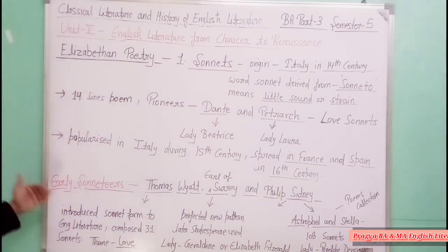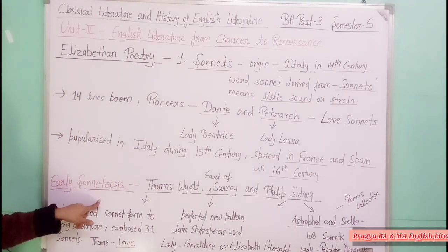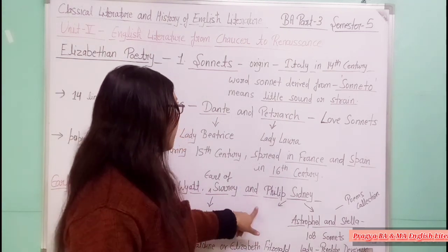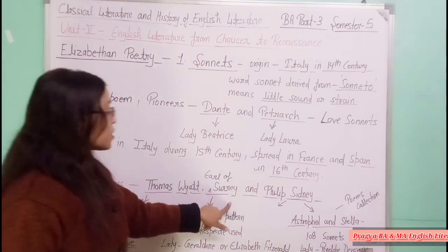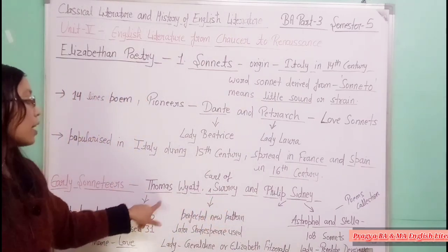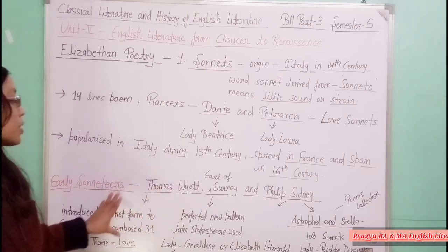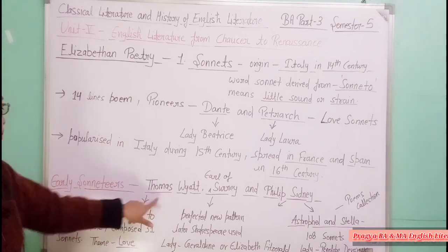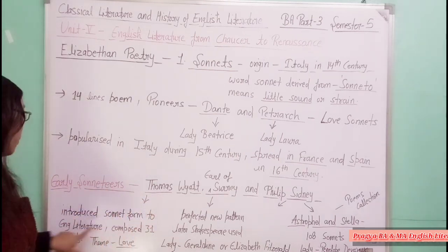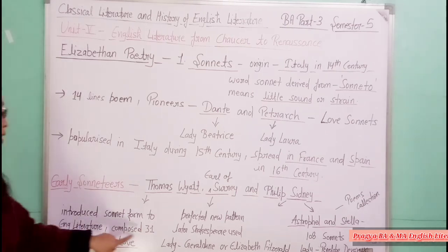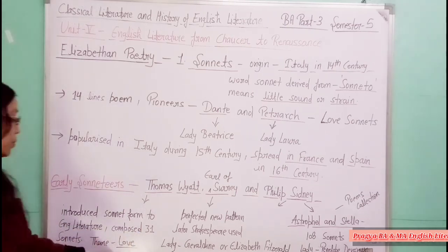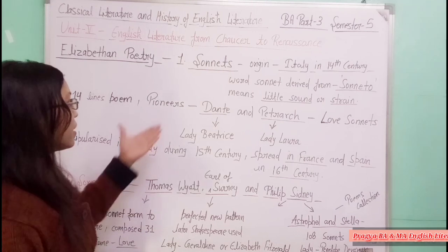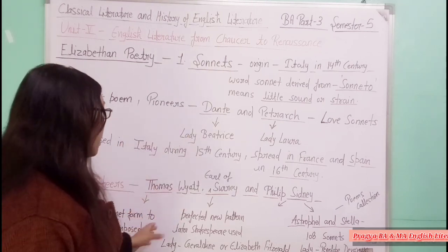Now let's look at early sonnets in English literature. Thomas Wyatt and the Earl of Surrey introduced the sonnet to England. Thomas Wyatt introduced the sonnet form to English literature and composed 31 sonnets whose theme was love. He brought this sonnet form to England.